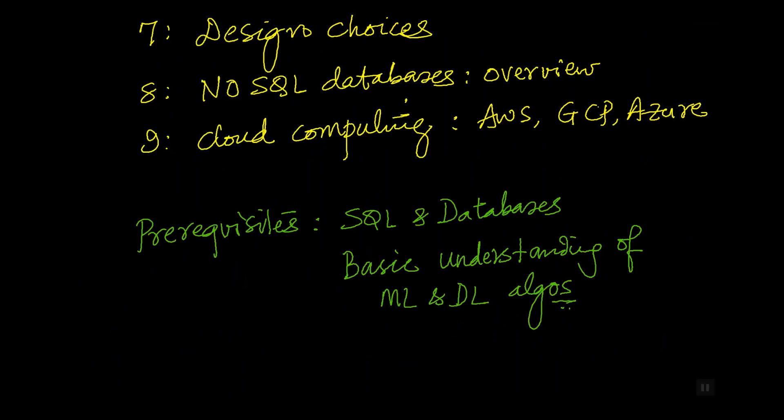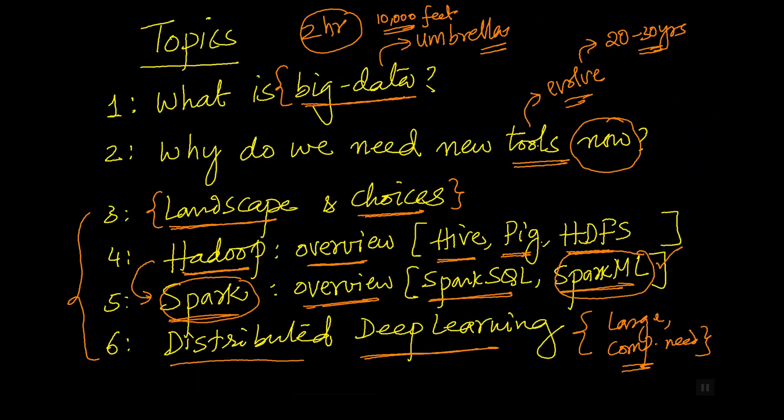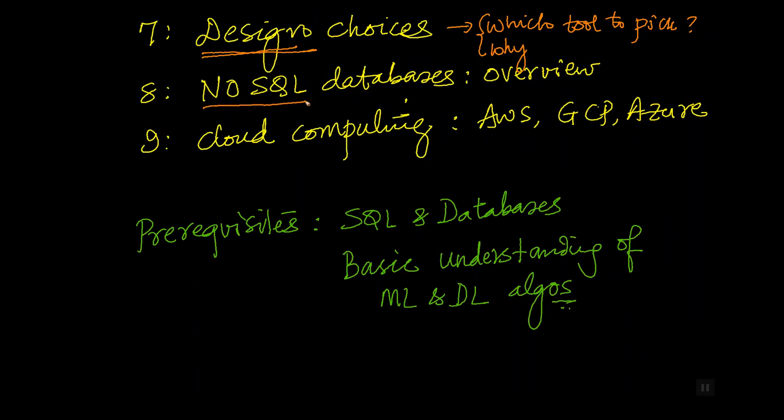After this discussion, we will also go over design choices, which means which tool to pick when. A design choice basically helps you understand which tool to pick when and why. Which tool to pick and why should you pick a tool here? Why do you even have to pick a big data tool? Why can't you just do with not using a big data tool? We will give a brief overview of something called NoSQL databases. I will show you how NoSQL databases are used for machine learning and deep learning applications, especially when you are productionizing these models. We will also touch upon how NoSQL databases are powerful for data pre-processing.